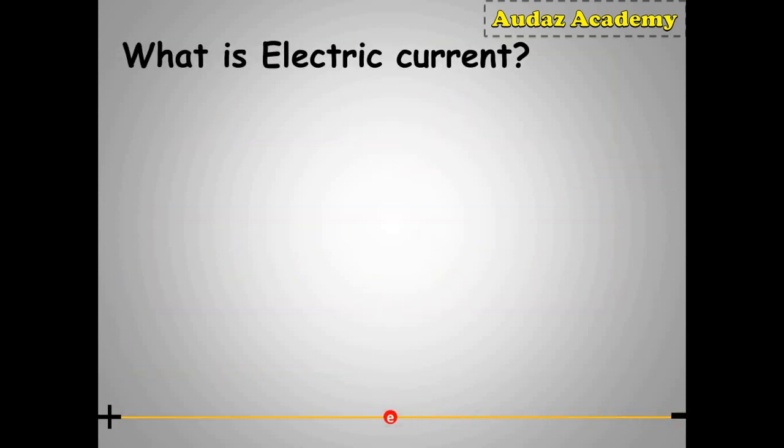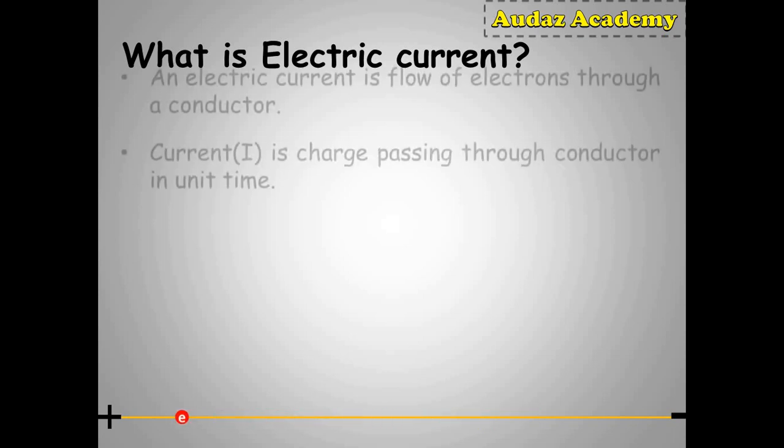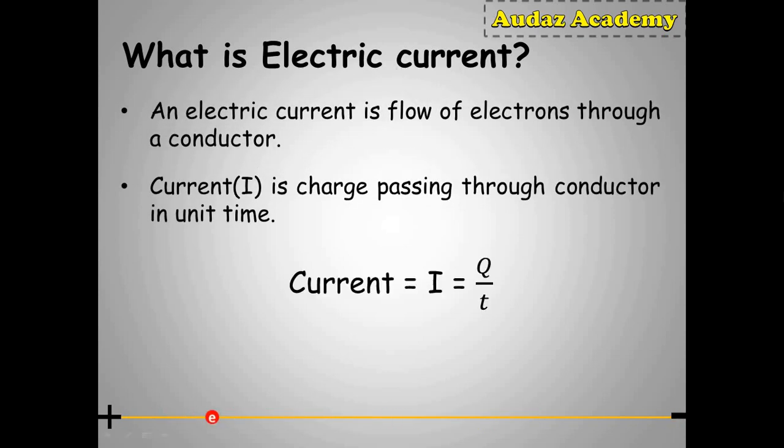Now we are going to see what is electric current. As described earlier, the flow of electrons is called as electric current. An electric current is flow of electrons through a conductor. A current I is charge passing through the conductor in time t. Mathematically, it can be written as current I equals to Q upon t, where capital Q is charge on electron and t is time taken by the electron to move from one point to another when potential difference is applied.